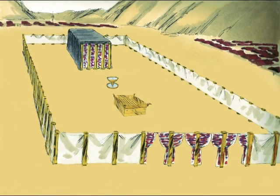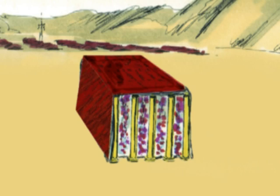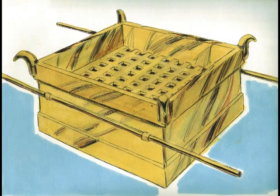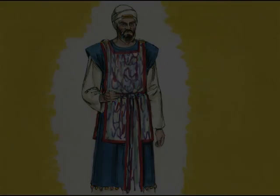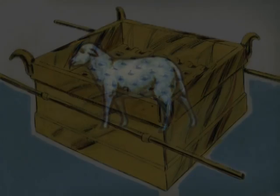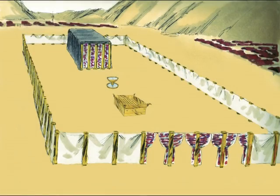Now every aspect of the tabernacle is a picture of Jesus Christ. The foundation shows Jesus as the only way to God. The structure shows Christ in his person, while the coverings show his character. The furniture shows Christ in his ministry, and the priesthood shows Christ in his intercession. The sacrifices show Jesus in his redemption, and the elements show Christ in his righteousness. The colors show Christ in his manhood, and the bars show Christ in his unity.